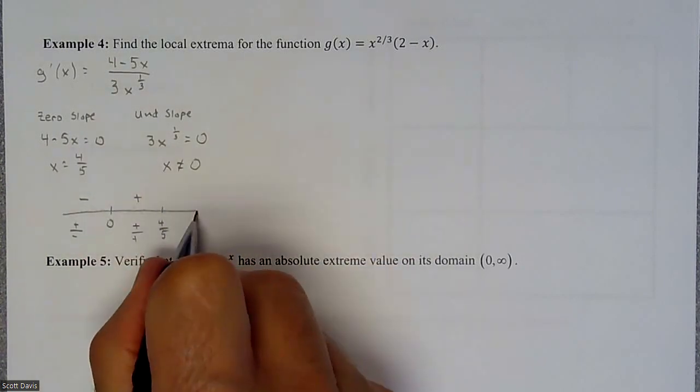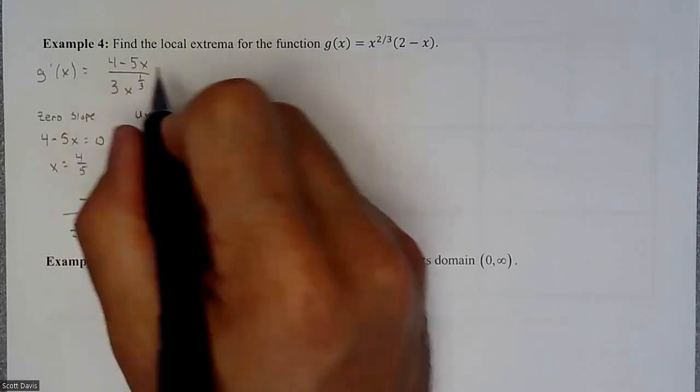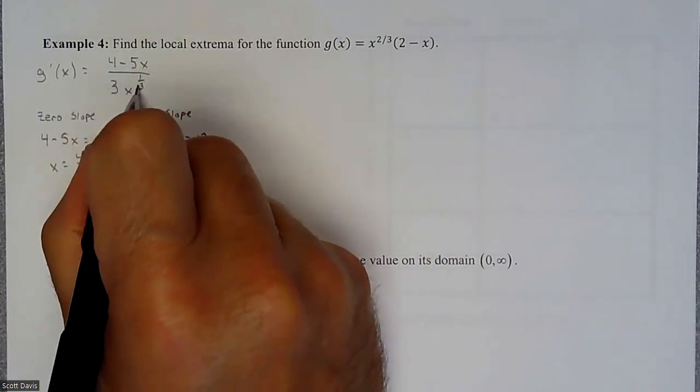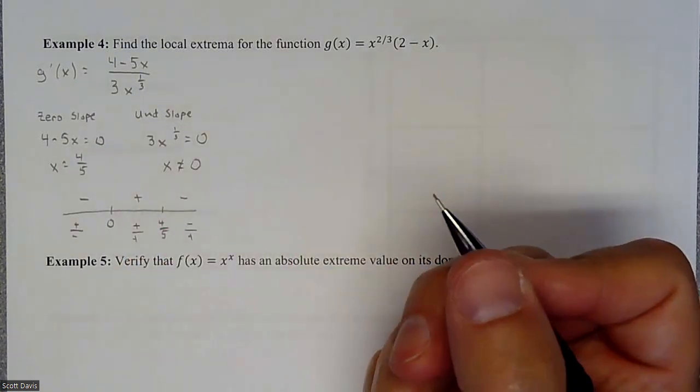And then if we go to the right of four fifths, we're going to plug in like a one. So that's a four minus a five would be negative. And then that's going to be positive. So we're going to have a negative. All right.